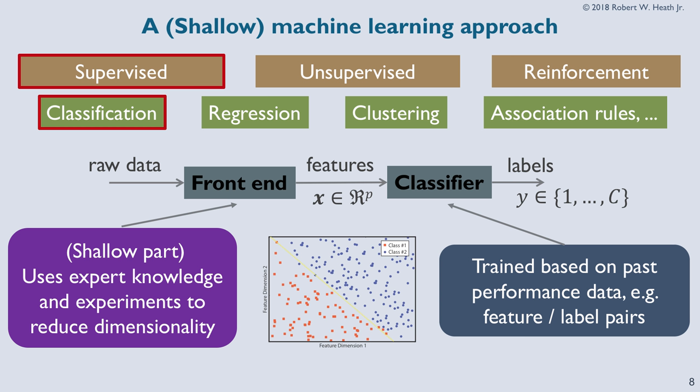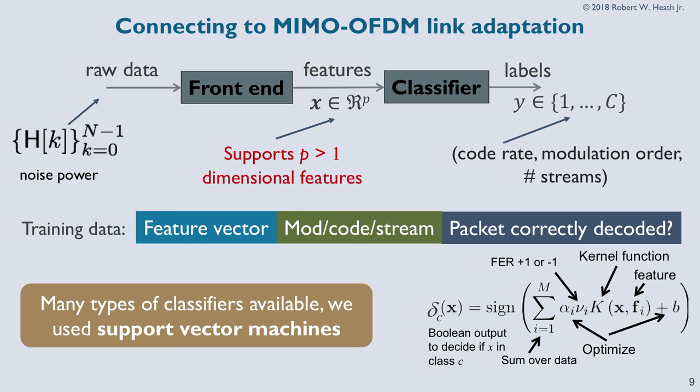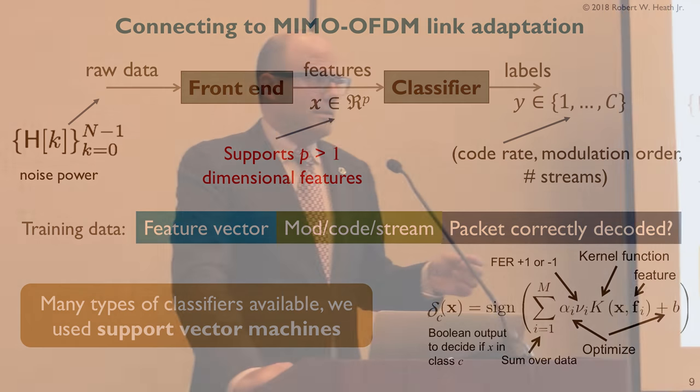When you take approaches based more on deep learning, those approaches will often do this front end as part of the learning process — you can send in a high-dimensional vector. The approaches I took here were simple, using either nearest neighbors or support vector machines. In the context of MIMO-OFDM, the input was that thousand-dimensional vector. The feature was potentially greater than one dimension. The class was going to be a code rate, modulation order, and number of streams — for example, 16-QAM, rate two-thirds, and two streams.